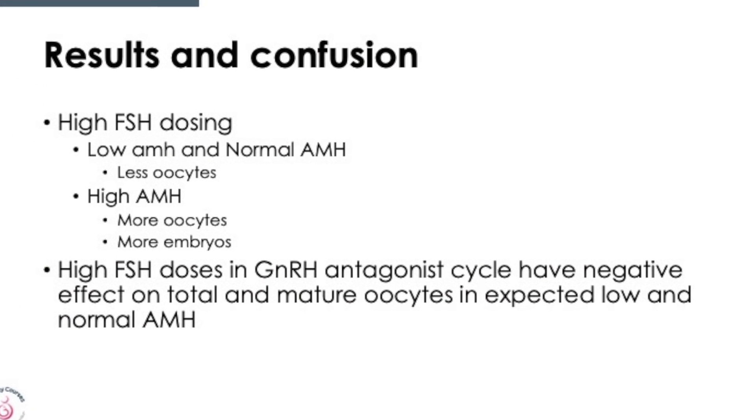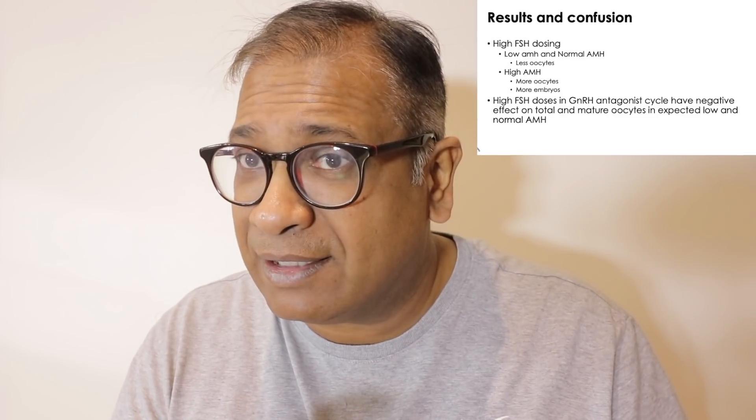Based on this paper, in low AMH patients, giving a very high dose is more likely to result in fewer oocytes. While in high AMH patients, if 150 IU does not work, giving a dose of 400 IU may change the outcome. This is a short talk aimed at improving ovarian stimulation. I hope you've enjoyed it — if so, please share the talk. Thank you very much.